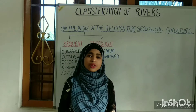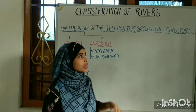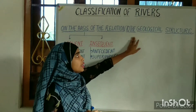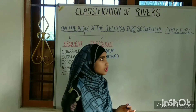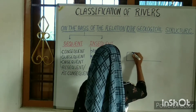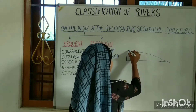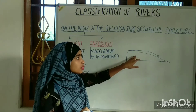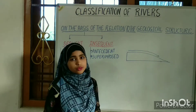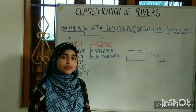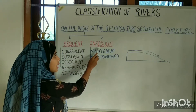Now let's move on to the classification of river. The river can be classified on various grounds. For example, it can be classified on the basis of the relation to the geological structure — that is, the regional slope. Some rivers follow the regional structure but some do not. On the basis of that, the river can be classified into two broad categories: the sequent river and the insequent river.